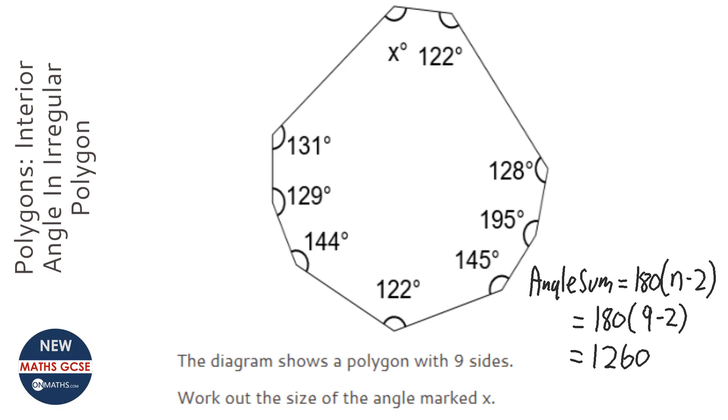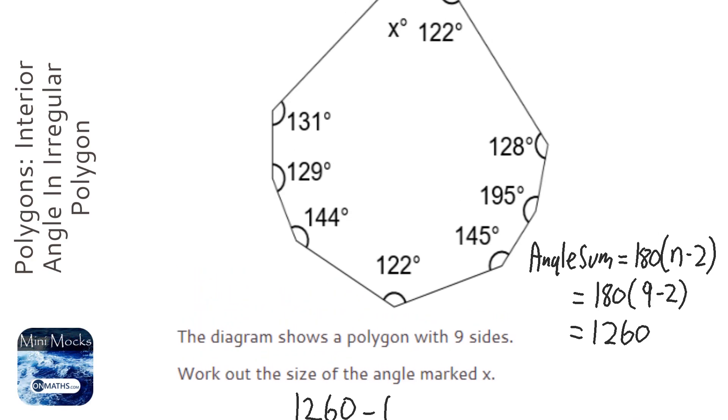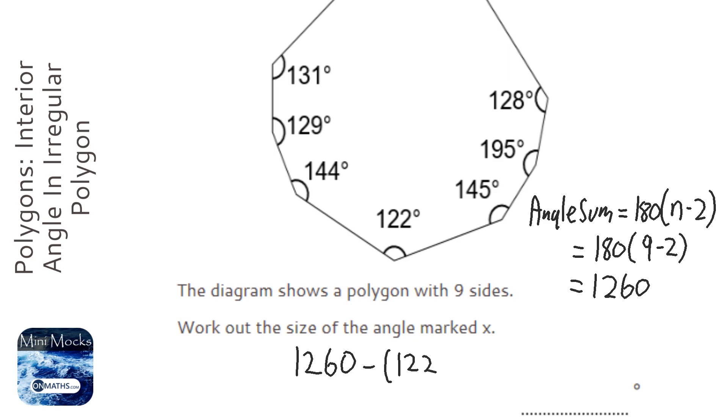Now to work out x, I'm just going to have to remove or take away all of the angles. And I'm not going to write this down, but I would suggest writing this down in your working out. I can start you off. So I'll do 1260 take away, and then I'm going to start right next to the x. So 122 plus